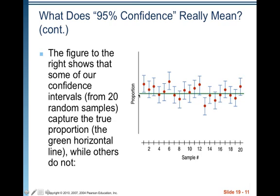We have special knowledge here — we know what the true population proportion is. The little arms on each sample represent going two standard errors above and below their particular p-hat. This first one, for example, goes two standard errors in both directions but doesn't cross the green line, so it does not contain the true proportion. But the next several do — within their two standard error extensions, they capture the true population proportion.